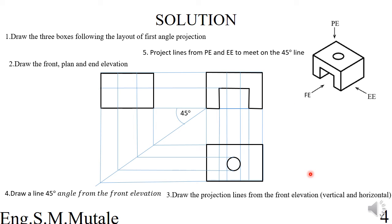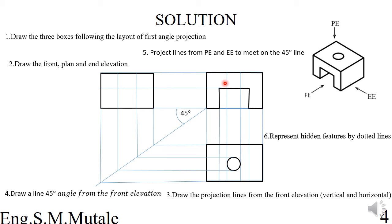Step six is to represent hidden features with dotted lines. When viewing from the front elevation, there is a hole going all the way through the object that you cannot see — it is represented by dotted lines. Similarly, viewing from the end elevation, internal details that have been projected but are not visible are also represented as dotted lines.